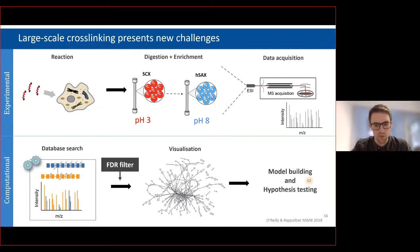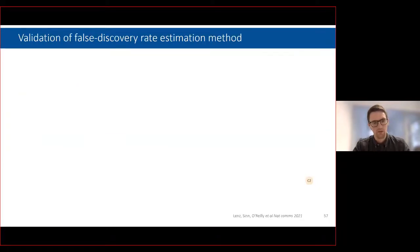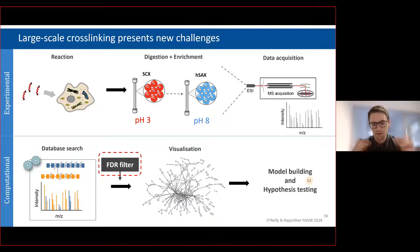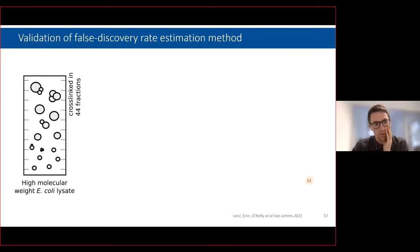Our lab produces visualization software to help with this. One important challenge I wanted to discuss is false discovery rate filtering. There has been criticism that interaction networks produced by in-cell cross-linking have useful information but also a lot of false positives. We decided to work on this FDR issue for discovering protein-protein interactions. We took an E. coli lysate, separated by size exclusion chromatography into 44 fractions from large to small complexes, cross-linked each fraction separately, then mixed all the cross-linked material again to simulate the dynamic range of a simple cell.